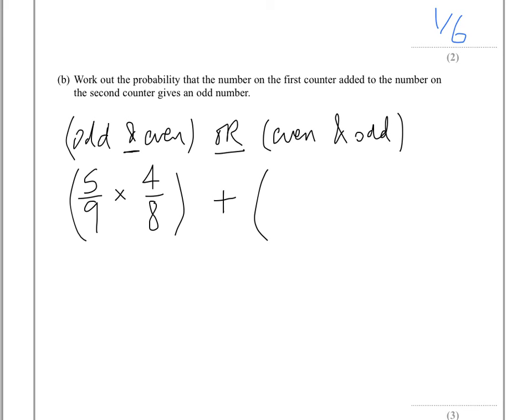Here we said and, so we multiply them. The probability of getting an even is the same as in the first part of the question, 4 over 9. And then of getting an odd, well we've still got 5 odds, but one less overall.